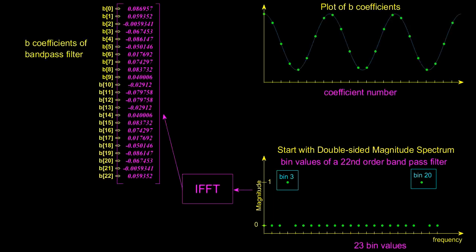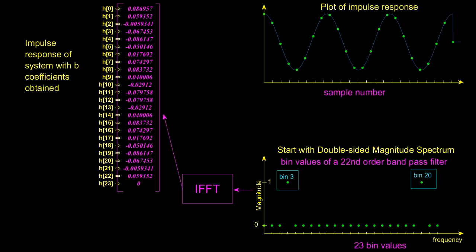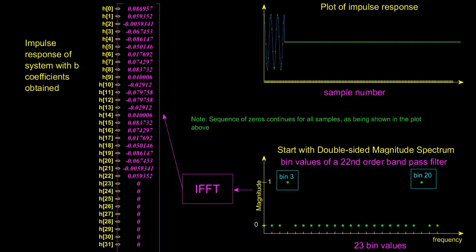So these values would become the B coefficients of my bandpass filter and this filter would have an impulse response of these B coefficient values followed by an infinite number of zeros. So a plot of the first 300 values of the impulse response would look like the plot being shown on the top right.